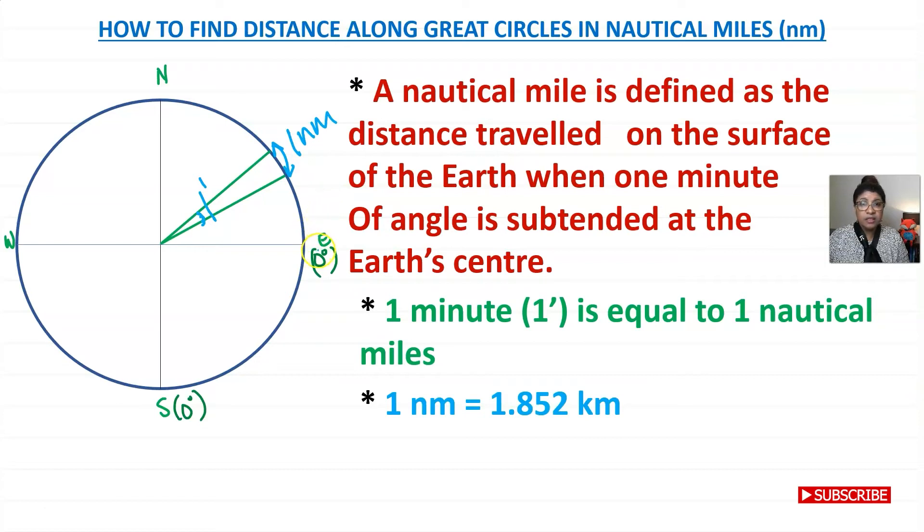One nautical mile is equal to 1.852 kilometers approximately. One degree is equal to 60 minutes on great circles, so you need to remember that. This is equal only on great circles, not small circles.